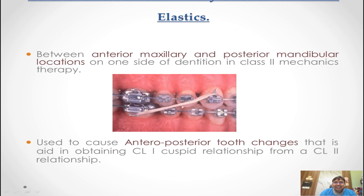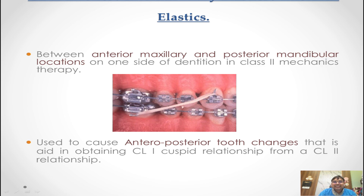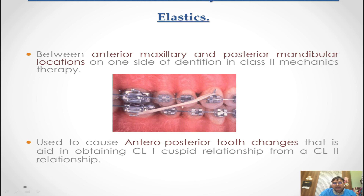Class 2 elastic is from the upper canine to the lower molar. This is class 2 mechanics — when we want to bring the upper segment backwards and push the lower segment forward. You have to remember multiple things while using class 2 elastics: first, is there any space distal to the canine, or is the entire arch figure-of-8 tied so they move as one segment? It's your decision how you want to use these elastics.